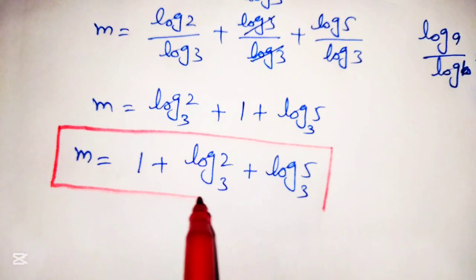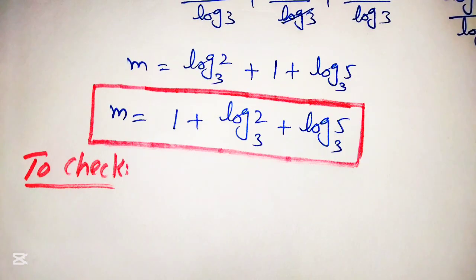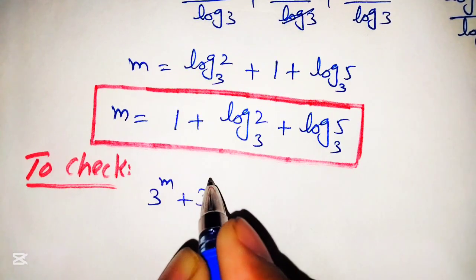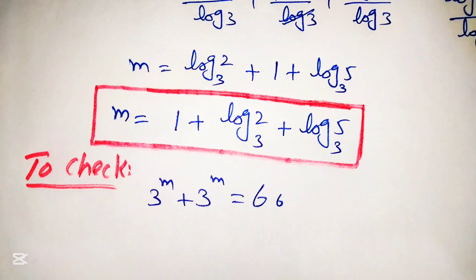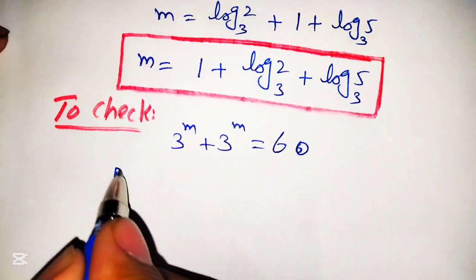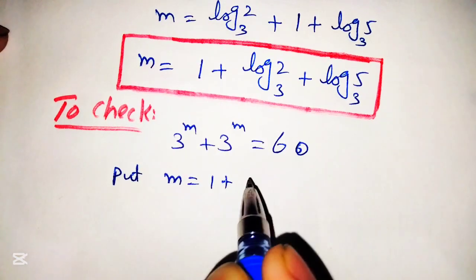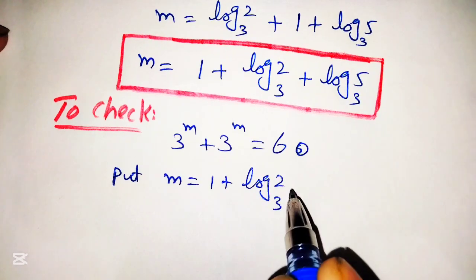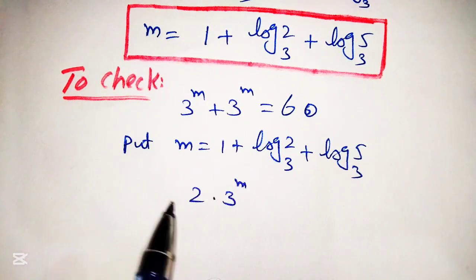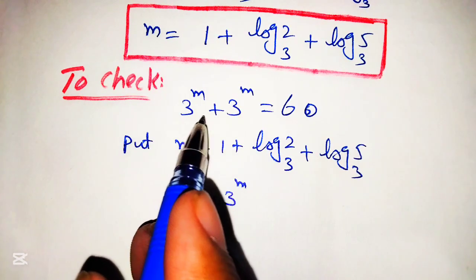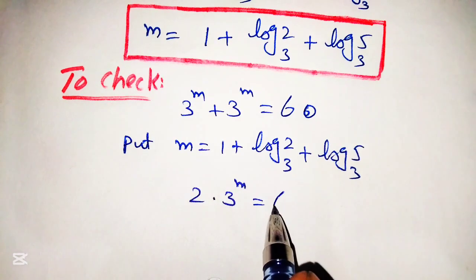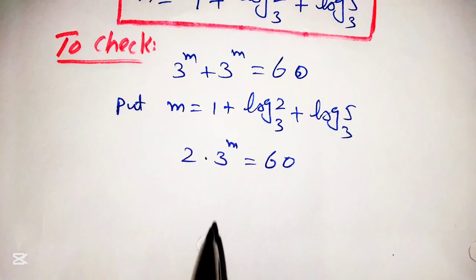Now we will verify this solution. We restate the given equation: 3 raised to the power m plus 3 raised to the power m is equal to 60, which simplifies to 2 into 3 raised to the power m is equal to 60. We will now substitute the value m is equal to 1 plus log of 2 with base 3 plus log of 5 with base 3 into this equation.